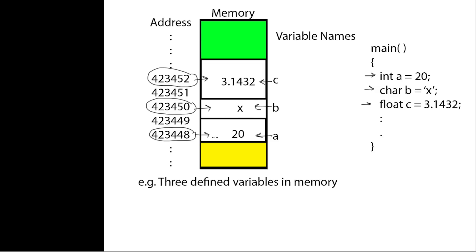These memory addresses are not given by us — they are automatically assigned by the operating system. You cannot explicitly give an address to a variable; you can only work with these addresses. Once a variable is initialized in memory while a program is executing, that memory location remains the same until the program finishes. As soon as you finish executing the program, that memory is released.